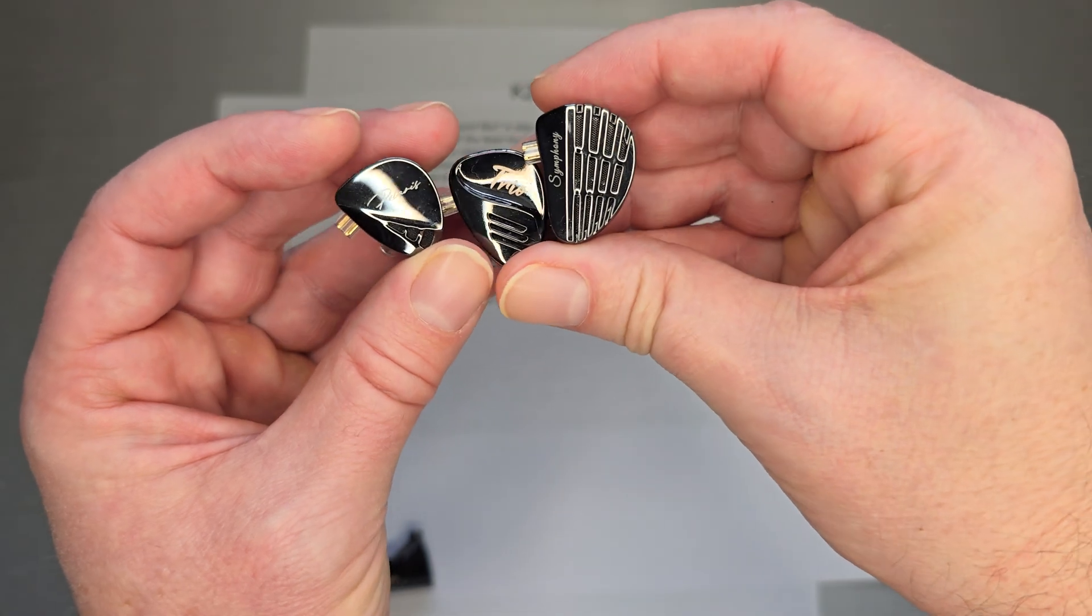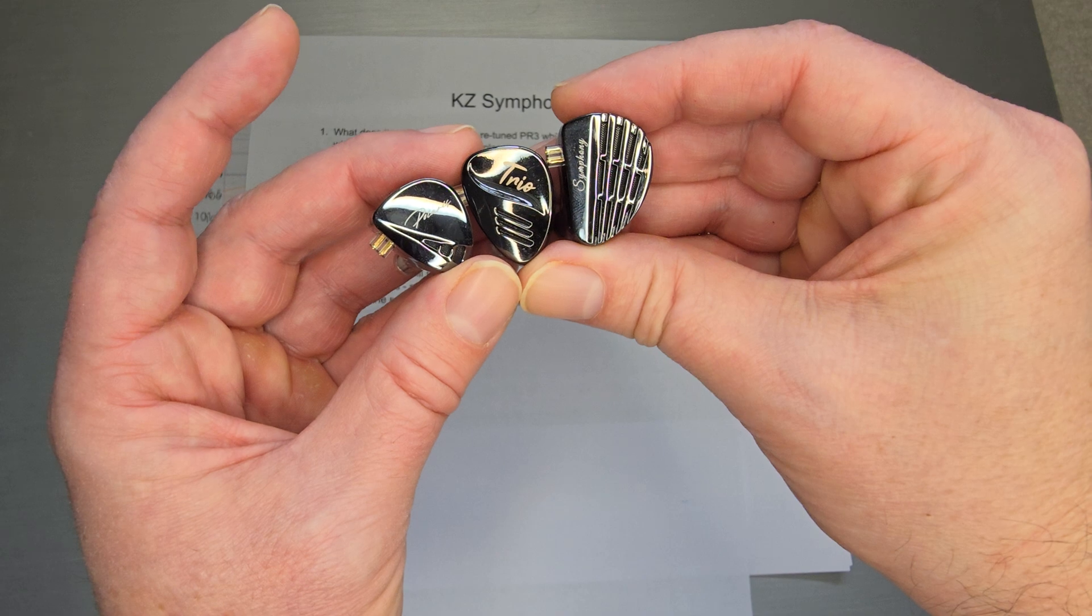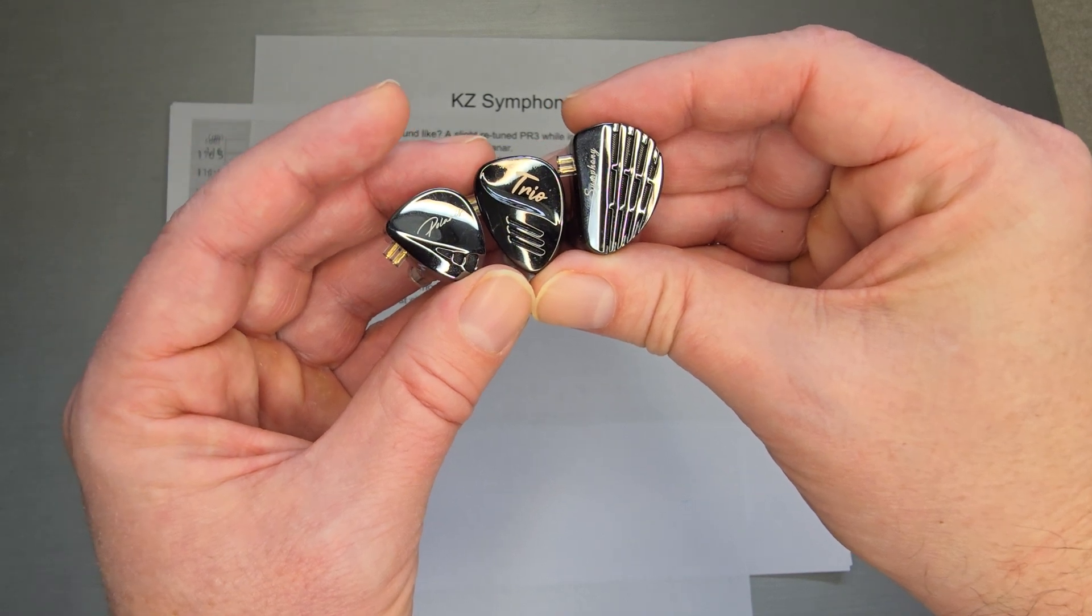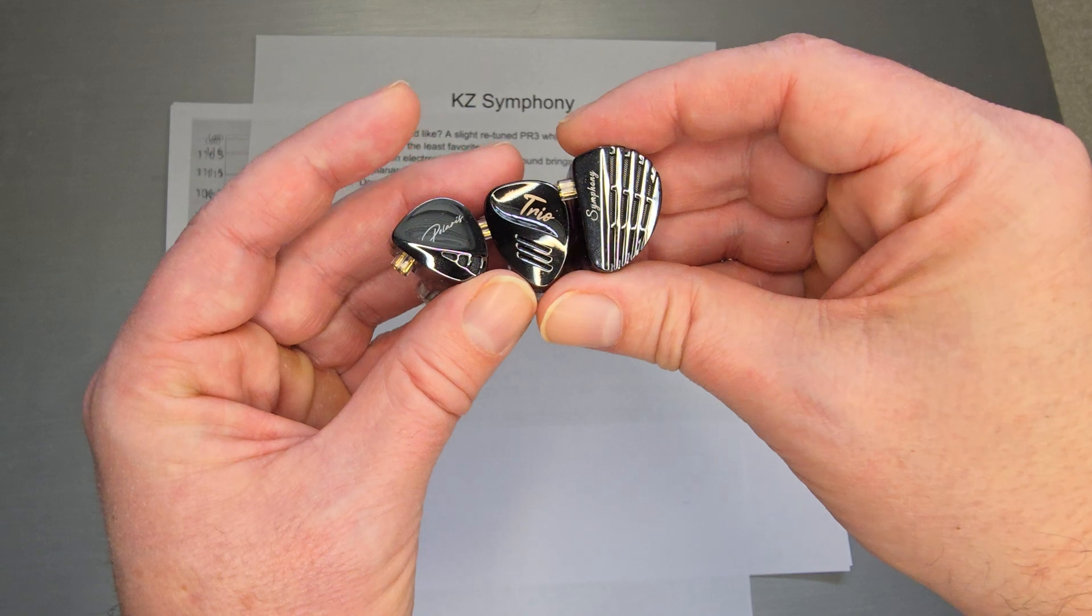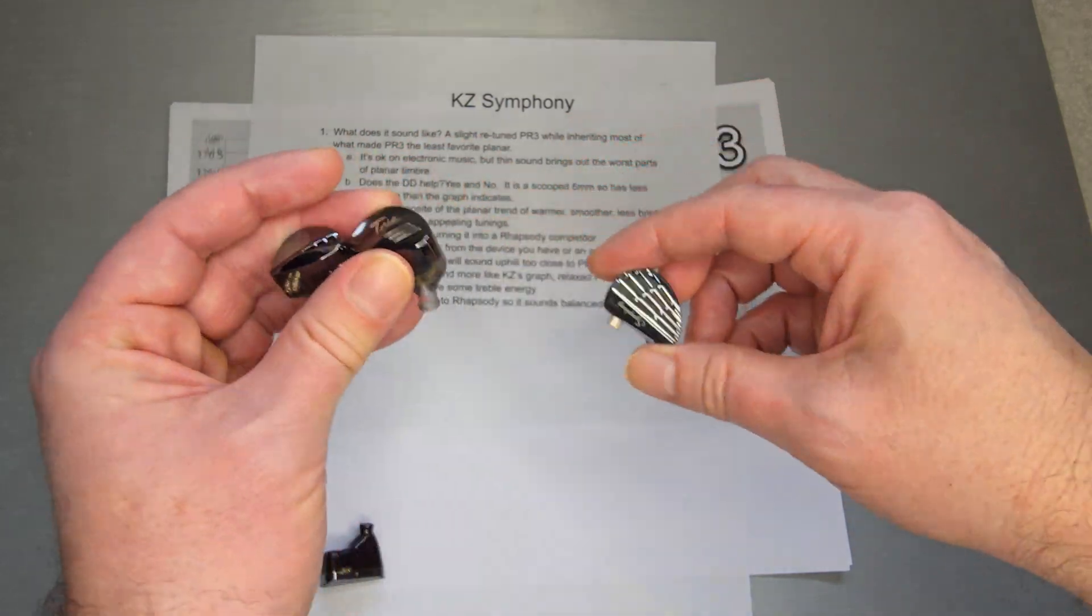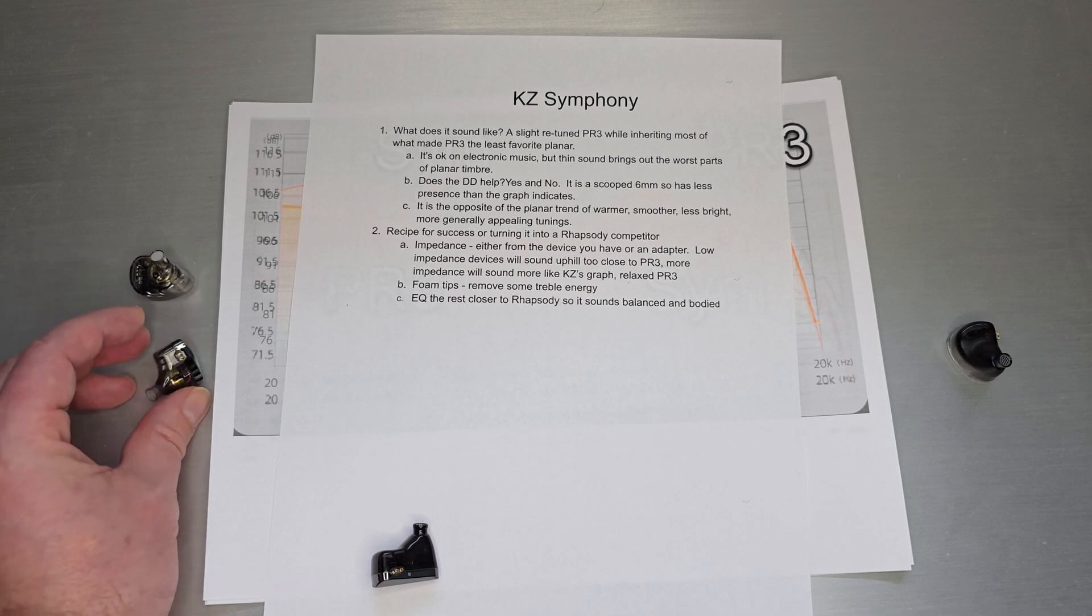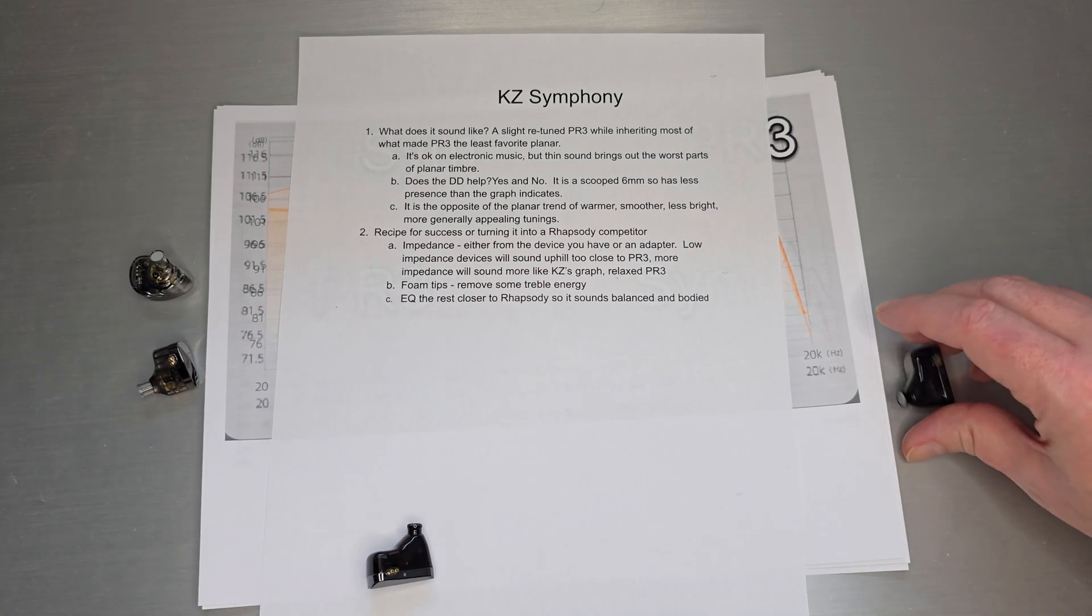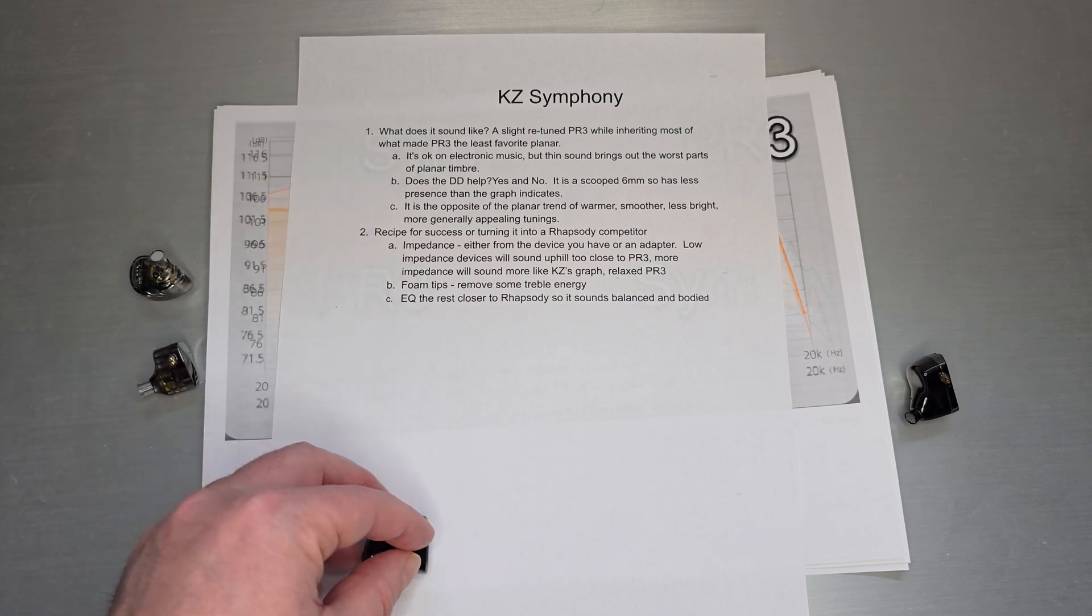So yeah, it's definitely noticeable if you are, especially if you use foam tips, it's definitely a noticeably big shell. I'm almost like Rhapsody. I'm not sure if it's the same size as Rhapsody. It probably is. But yeah, I think the larger shells tend to be a little more uncomfortable for people. And yeah, I think this one is going to be one that I definitely noticed it after a while. So let's kind of start at the beginning. So what does it sound like? And I'll say it sounds like a slightly retuned PR3, and we'll kind of get into that in a minute as well.